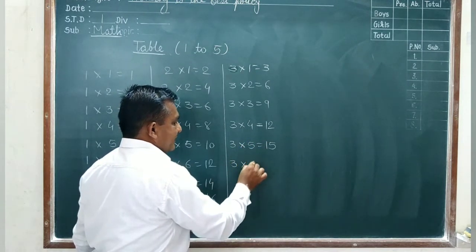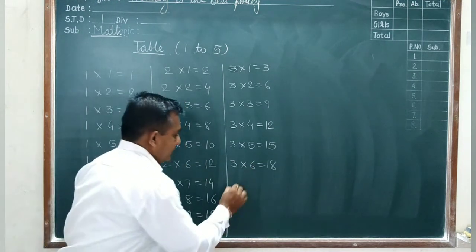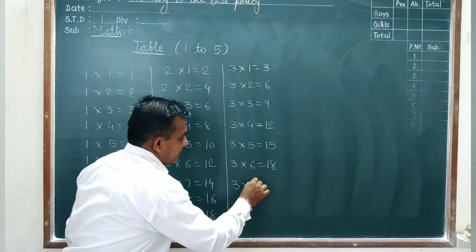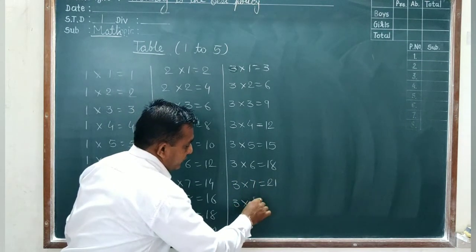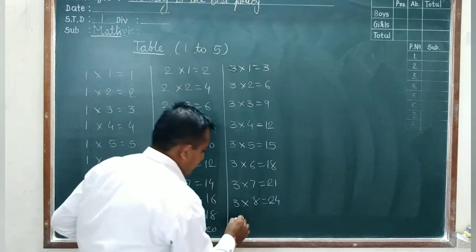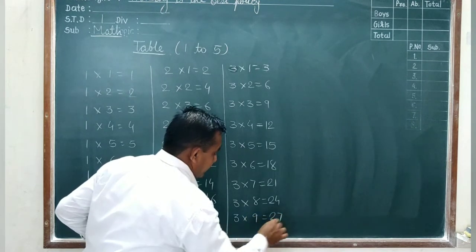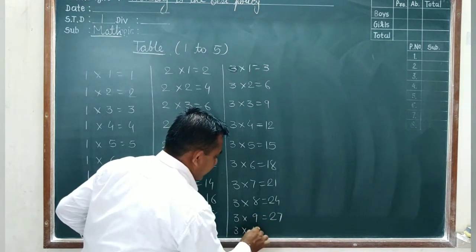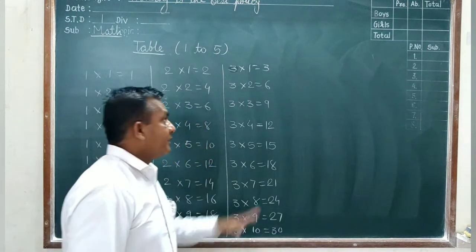3 sixes are 18, 3 sevens are 21, 3 eights are 24, 3 nines are 27, and 3 tens are 30.